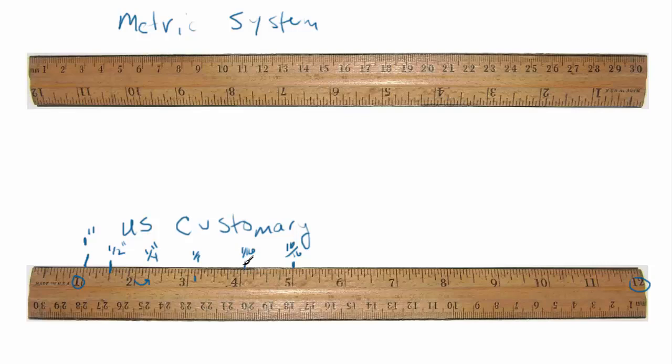Now some rulers will actually have one more mark at thirty-two. And then if you have engineering rulers, you might have sixty-four and so on. You might get down even further.